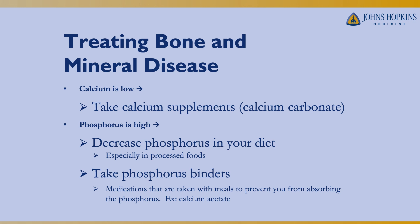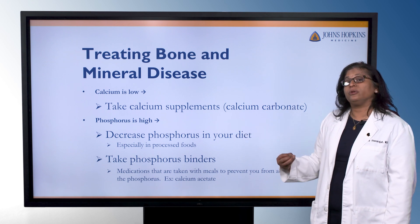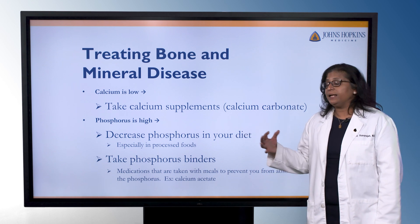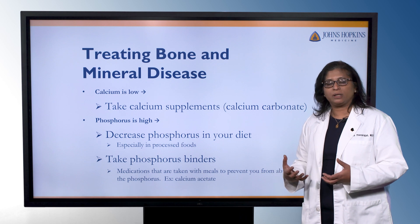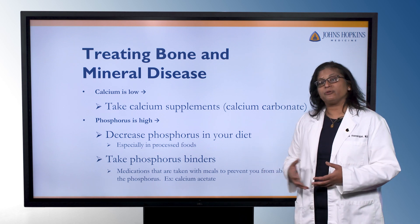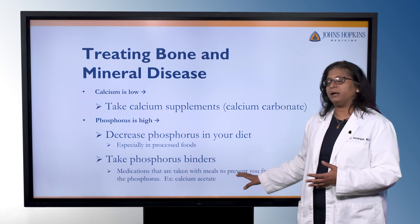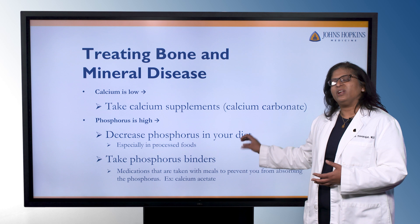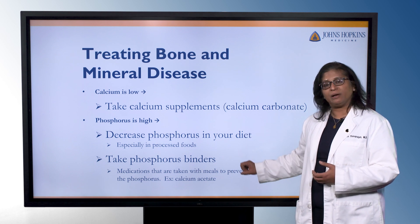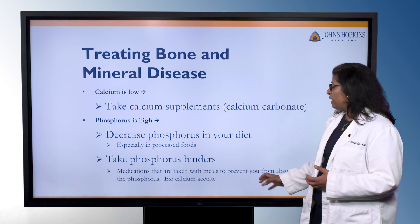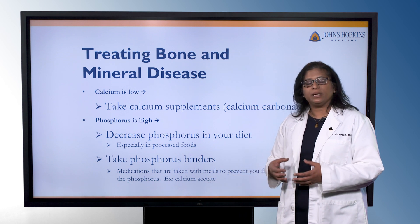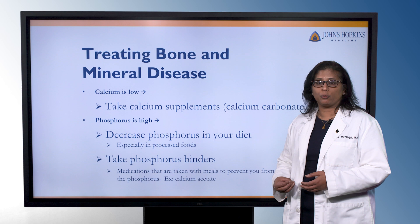Treating bone and mineral disease starts with addressing the different aspects. For low calcium, we use calcium supplements like calcium carbonate. If phosphorus is high, we start with decreasing phosphorus intake in the diet. Phosphorus comes from dairy products, animal proteins, and also preservative agents, so we have people cut back on dark colas, processed foods, and anything with a lot of preservatives. Sometimes even with the best dietary intentions we can't control phosphorus, and we may start someone on phosphate binders — medications taken with each meal to prevent phosphorus absorption.